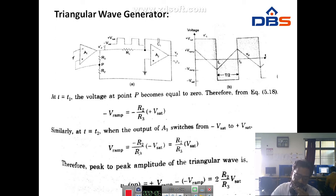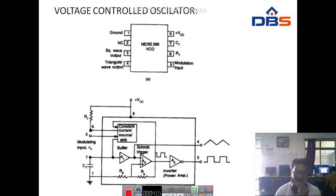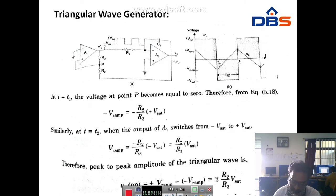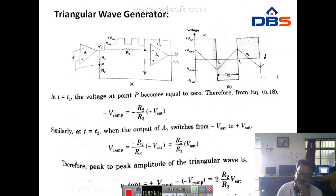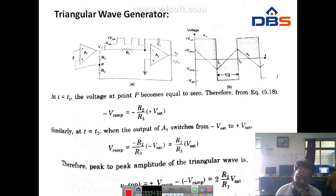Here we have another triangular wave generator circuit which requires fewer components. In this circuit, the generator consists of comparator A1 and integrator A2. Comparator A1 compares the voltage at point P continuously with the inverting input at zero volts. When the voltage at point P goes slightly below or above zero volts, the output of A1 is at the negative or positive saturation level.